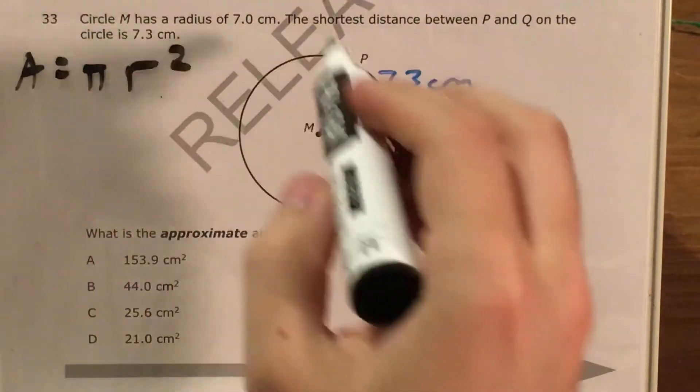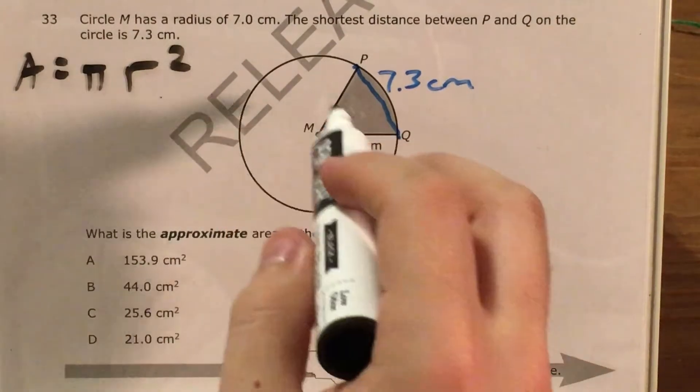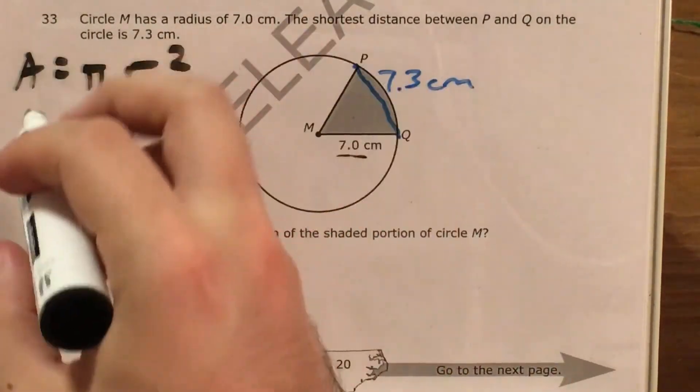Our area is going to be pi times our radius squared, and unlike another question, this one actually gave us our radius to start with, so I know that everywhere I see radius I'm going to plug in 7.